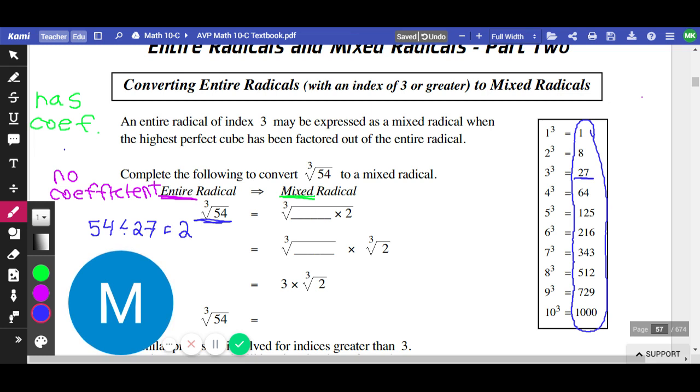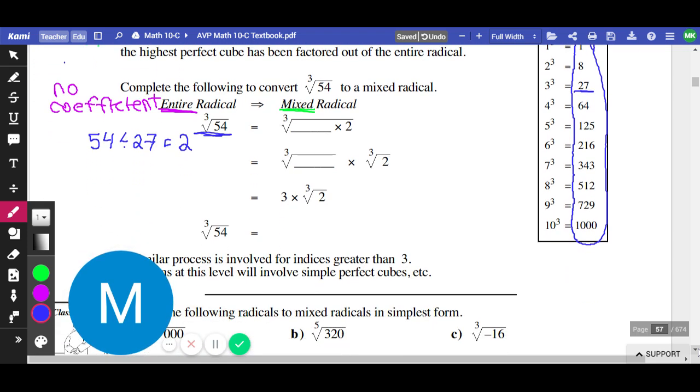So it'll work. What this means is that I can rewrite 54 as 27 times 2. That's how division works. I could just go the opposite way and call it multiplication. 54 divided by 27 is 2. I mean, 27 times 2 would be 54. That's exactly what we do.